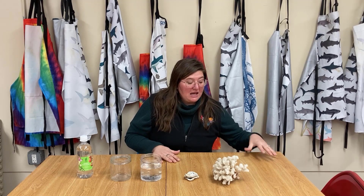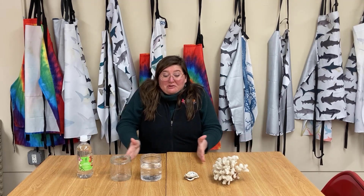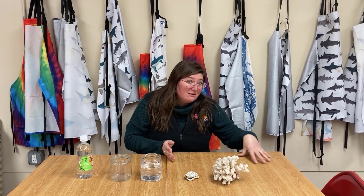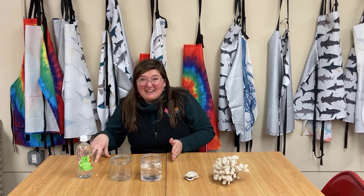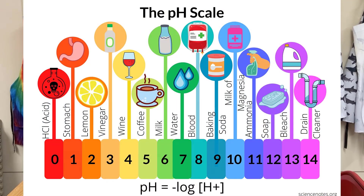We have our alkaline or basic at a level of zero and our acidic at a level of 14, and in the middle we have a level of 7 which is neutral — like our drinking water. We have our bitter-tasting products and our acidic, lime-and-lemon-tasting products on each side of that pH scale.